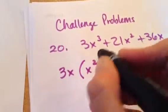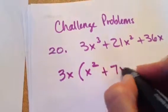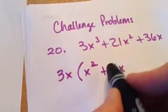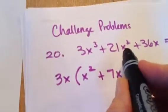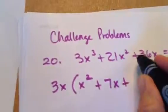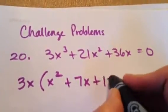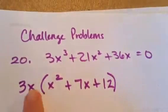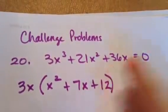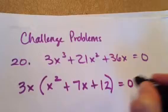So notice that's going to leave me x squared plus 7x, because notice 3 times 7 gives me 21. x times x is going to give me the x squared. And let's see, 3 will go into 36, what, 12 times? And notice 3x times 12 is 36x, and that equals zero.